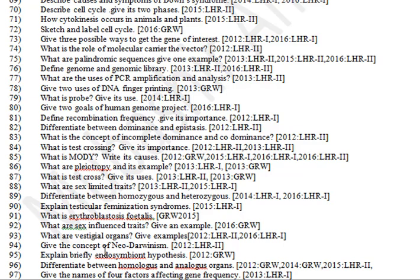What are vestigial organs — give examples? Give the concept of neo-Darwinism. Explain briefly the endosymbiotic hypothesis. Differentiate between homologous and analogous organs. Give the names of four factors affecting gene frequency.